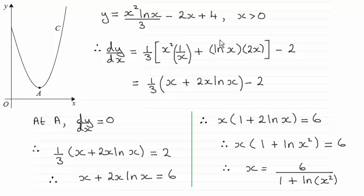Then we add this part, natural log of x, and multiply it by the differential of the other part. Differential of x-squared is 2x.